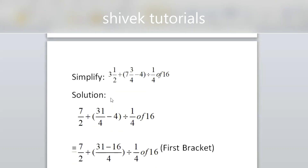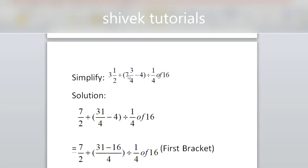Next question. In this question you can see mixed fractions — two terms are in mixed fraction form. Before solving using BODMAS, we convert the mixed fractions first. 3 and 1/2: 3 twos are 6 plus 1, giving 7/2. And 7 and 3/4: 7 fours are 28 plus 3, giving 31/4. So instead of 3½ and 7¾, we write 7/2 and 31/4.